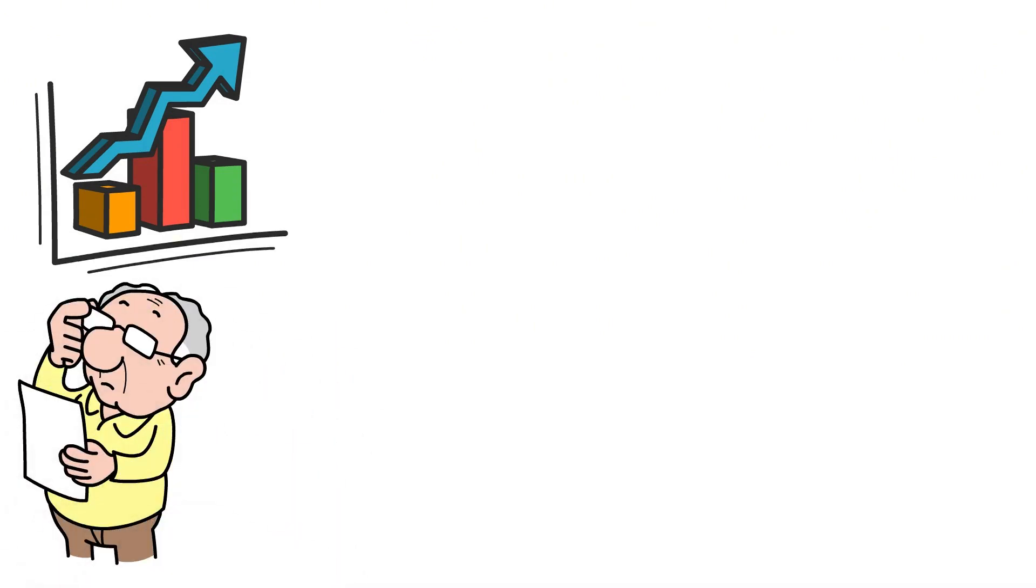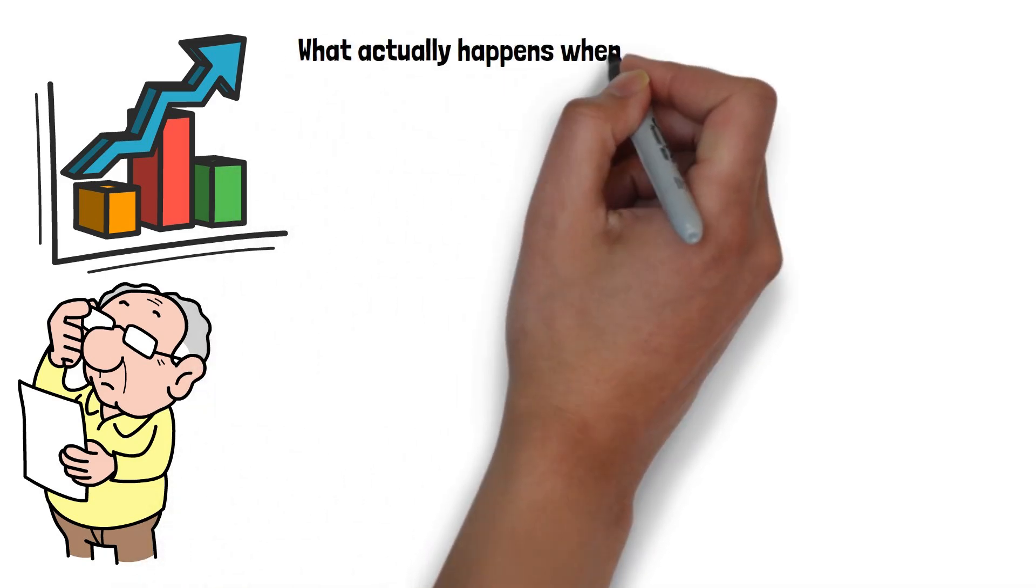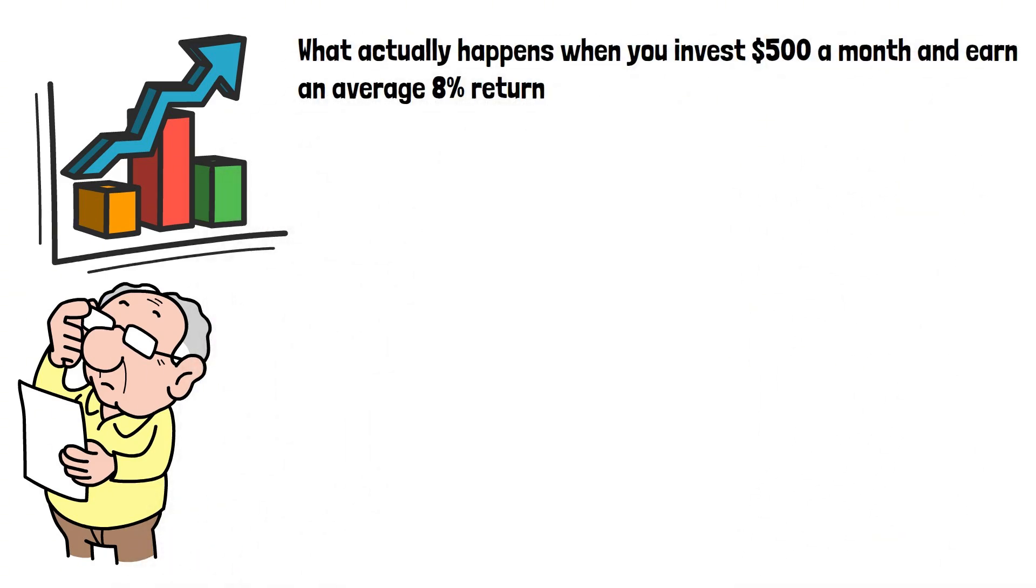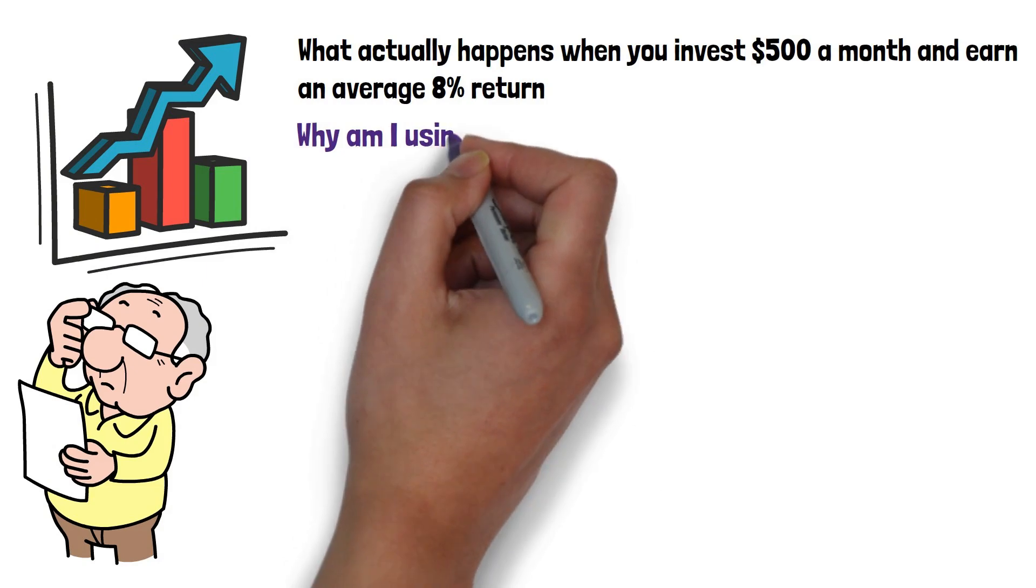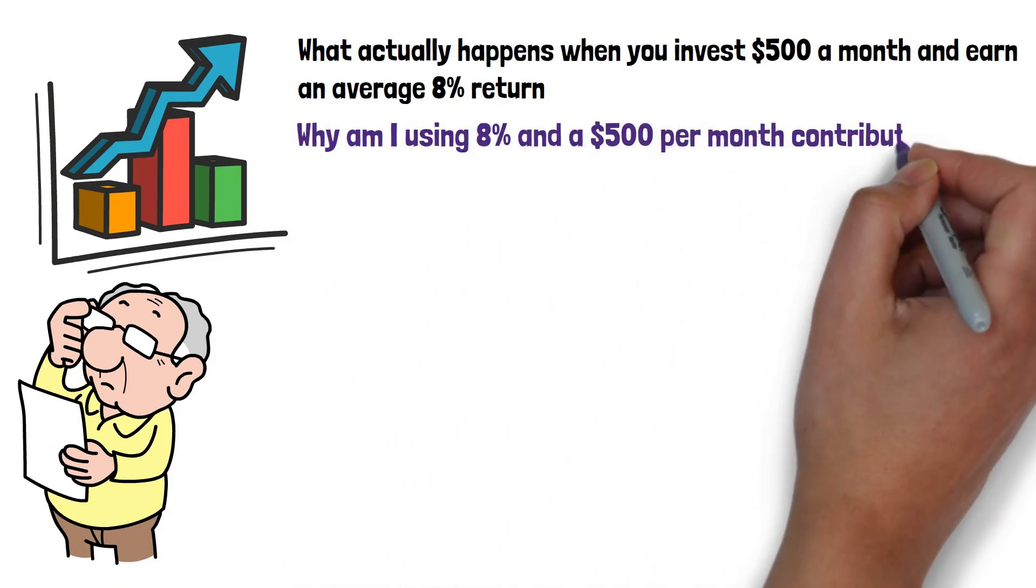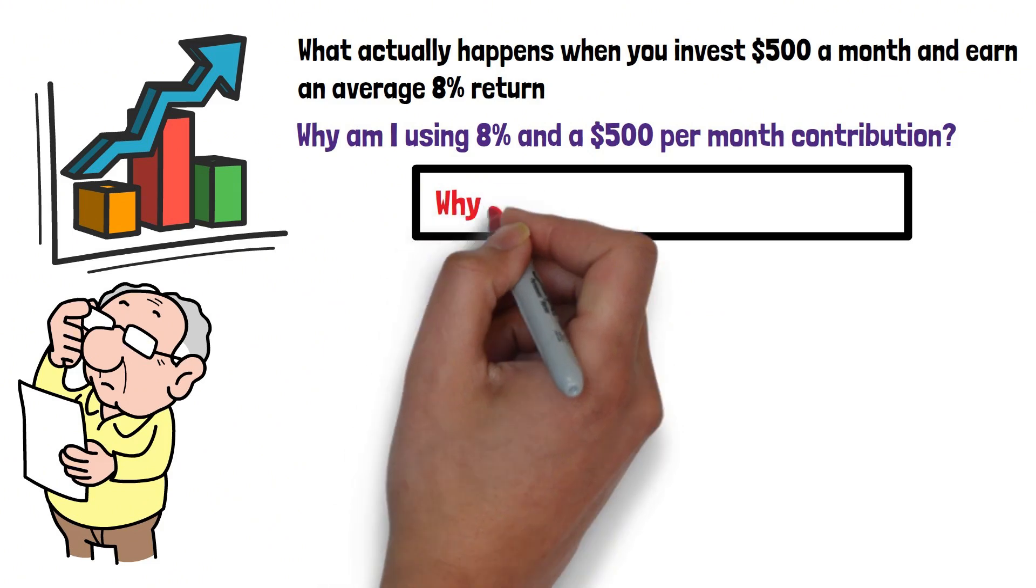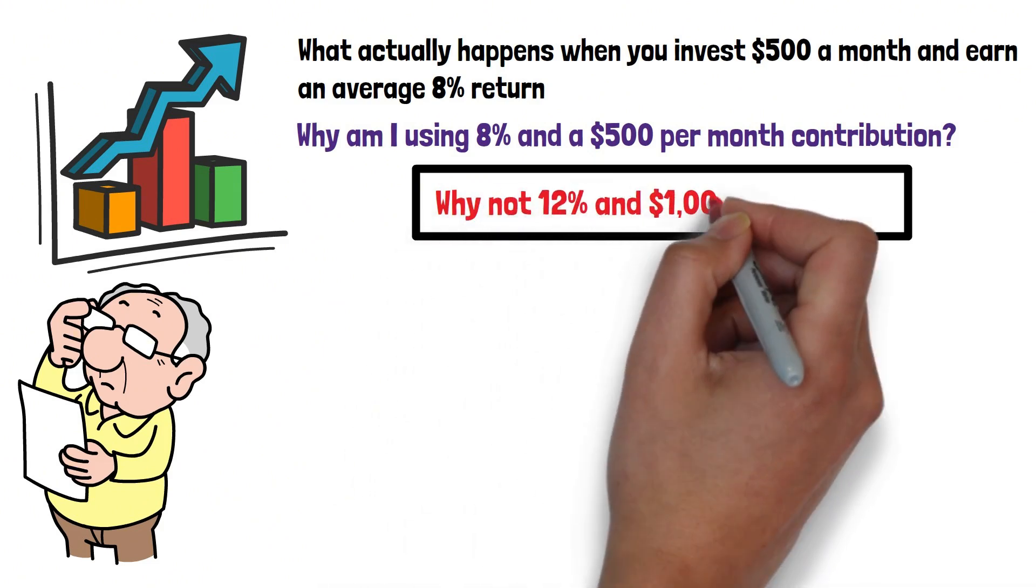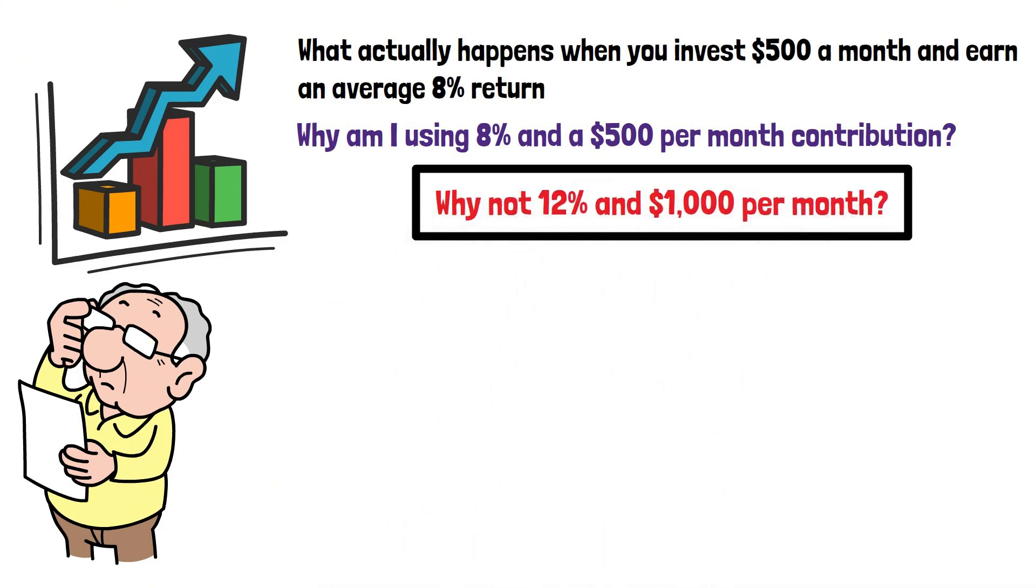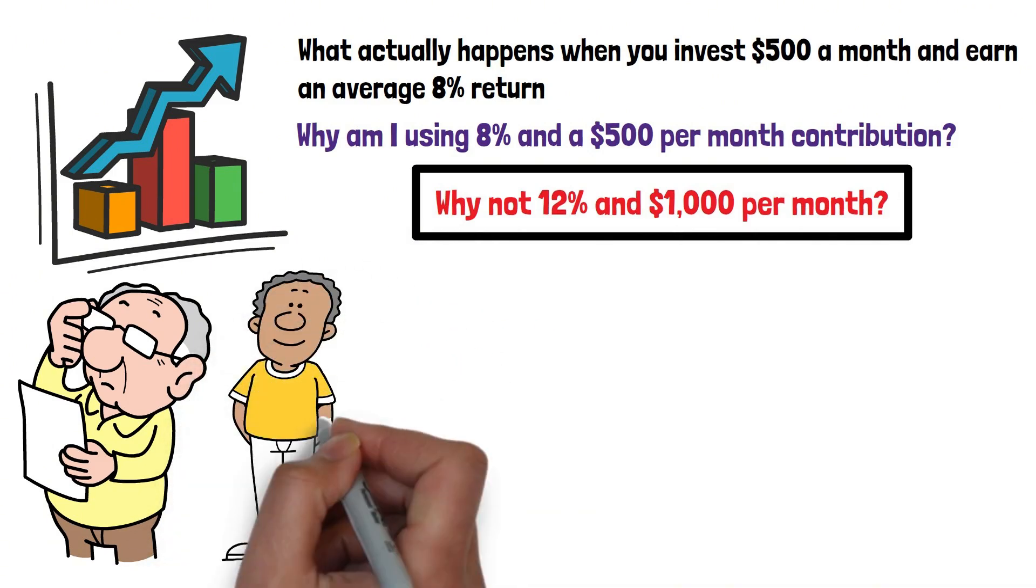Now let's look at the math behind the journey. What actually happens when you invest $500 a month and earn an average 8% return? But first, why am I using 8% and a $500 per month contribution? Why not 12% and $1,000 per month? Simple, because I want this to be realistic and conservative, reachable by most anyone with the desire to do it.